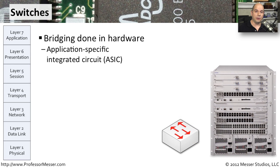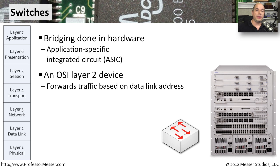These days, if you're connecting to a network, you're probably plugged into a switch. A switch is effectively a multi-port bridge, and all decisions about moving data inside the switch are made in hardware, so it's very fast. If you're familiar with the OSI model, switches work at OSI Layer 2. They are very intelligent about where they send your data. With a hub, traffic coming in one port was sent to every other port.